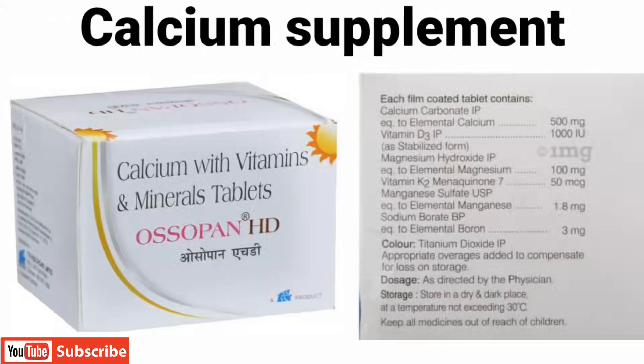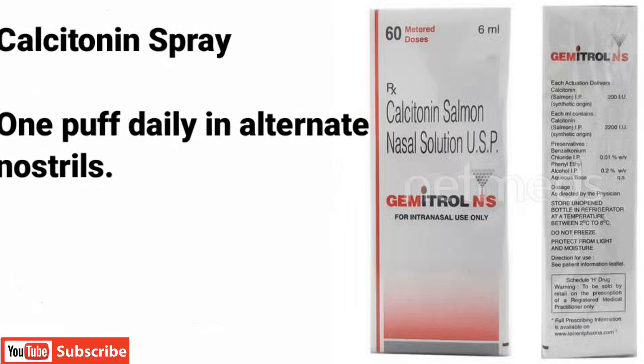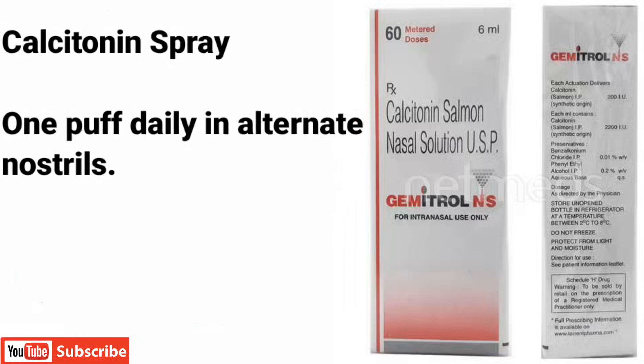For cases where you need a complete calcium supplement, you can take Osopen HD, which contains calcium carbonate, Vitamin D3, magnesium, Vitamin K2 MK7, manganese, and boron. It is a complete supplement and can be taken once daily after lunch. Calcitonin nasal spray is also used in osteoporosis at a dose of one puff daily in alternate nostrils, available as Gemitrol NS at pharmacy stores.